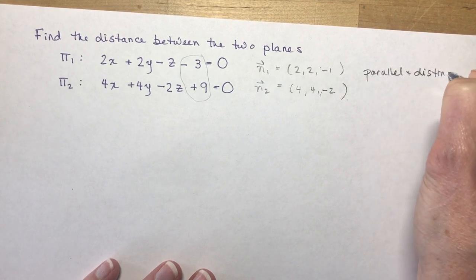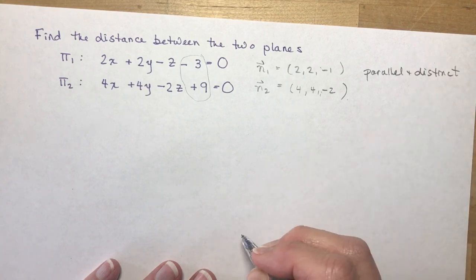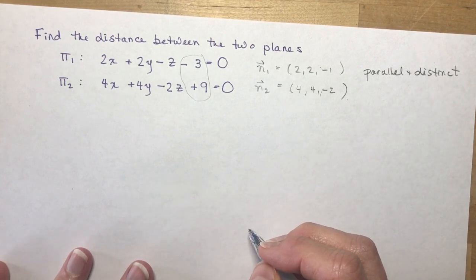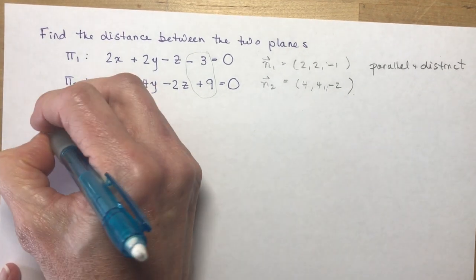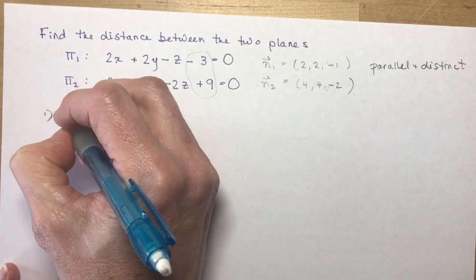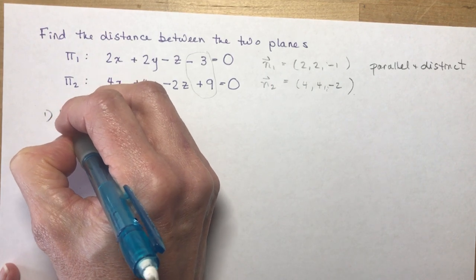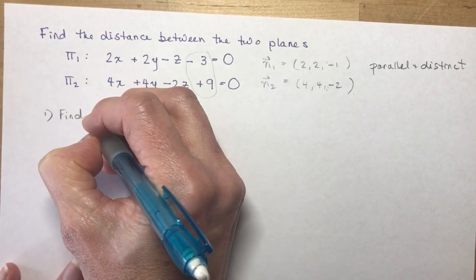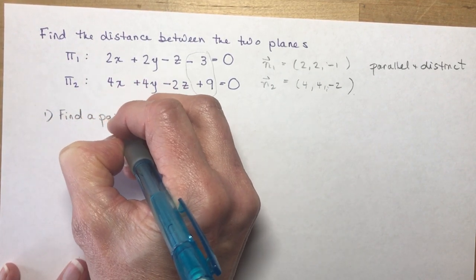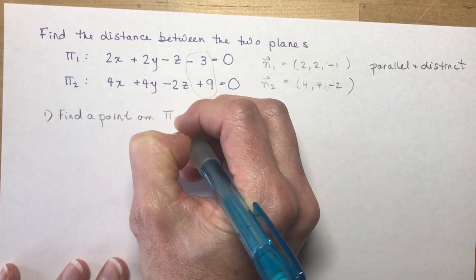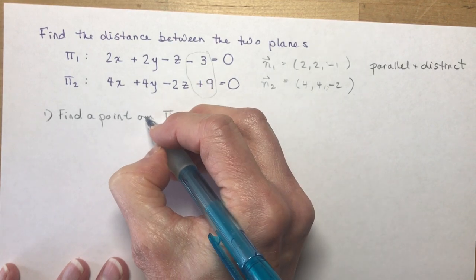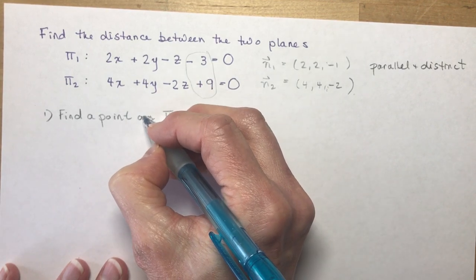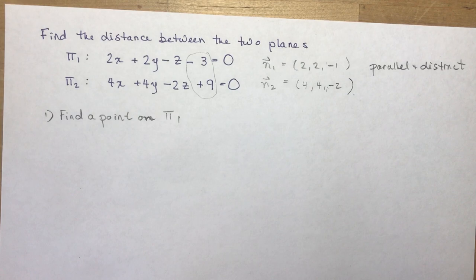So in order for me to find the distance between those two planes, I'm going to need to find a point on one of the planes. So let's find a point, just like we did with the distance between two parallel lines in the last lesson. We need to find a point on π₁. And the easiest way to do that looks like we might need a little meditation going on here.